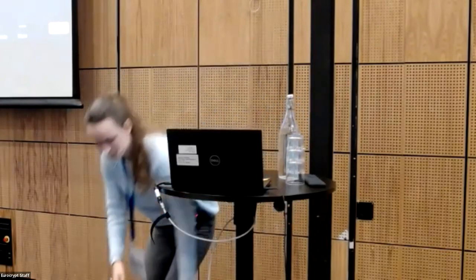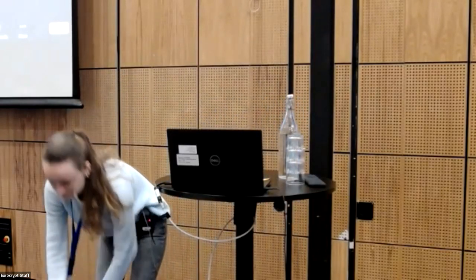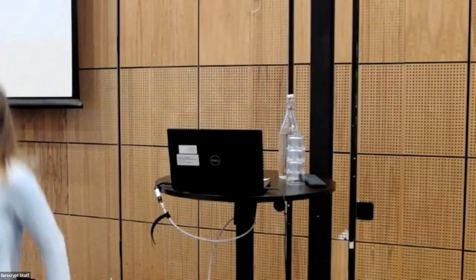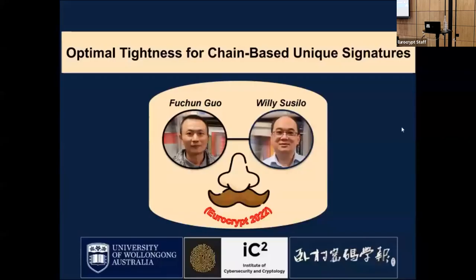The next talk will be given online. It's about optimal tightness for chain-based unique signatures and the speaker is Fu Chung Guo. Hello everyone, my name is Fu Chung and I'm presenting for Australia. The title of our paper is 'Optimal Tightness for Chain-Based Unique Signatures.' This work is joint with Willy Su and Shi Lu; we are both from the University of Wollongong.